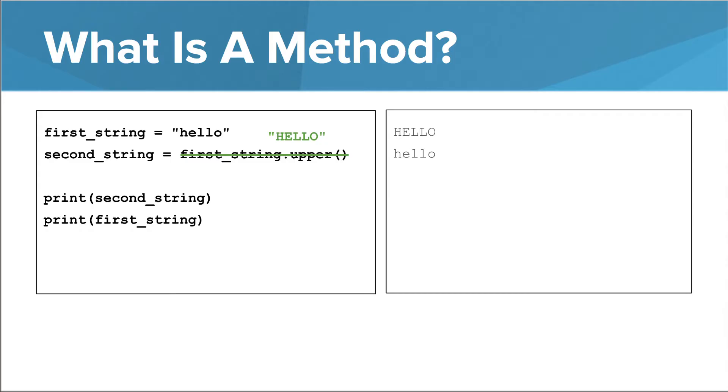You can think of the method call on the second line like a call to a function that has a return value. What makes a method a method is the fact that you call it on a thing. In this case, the thing is a variable.